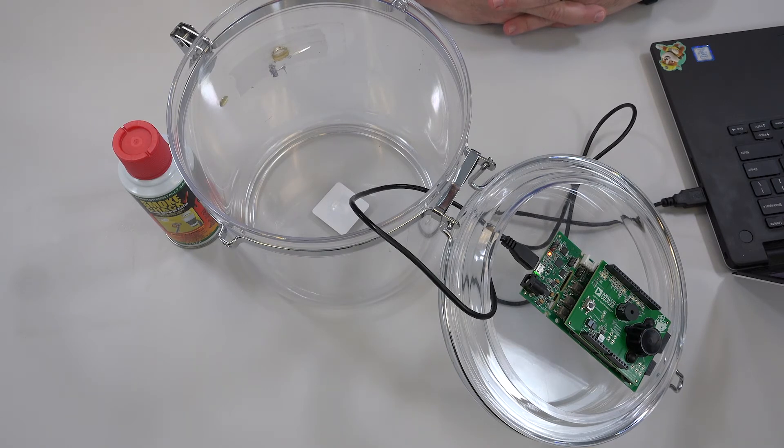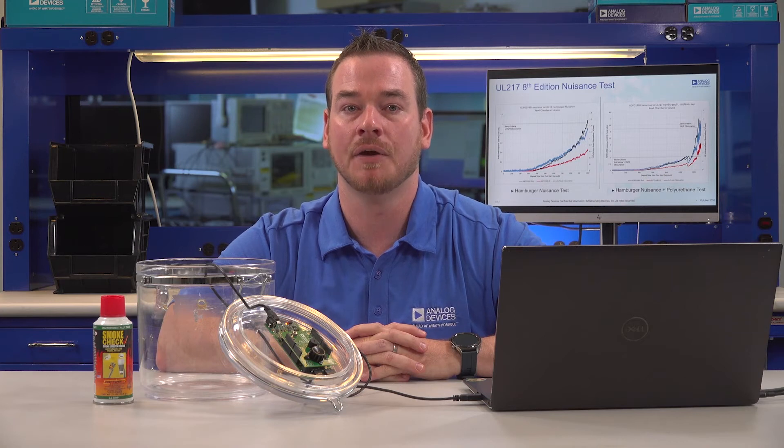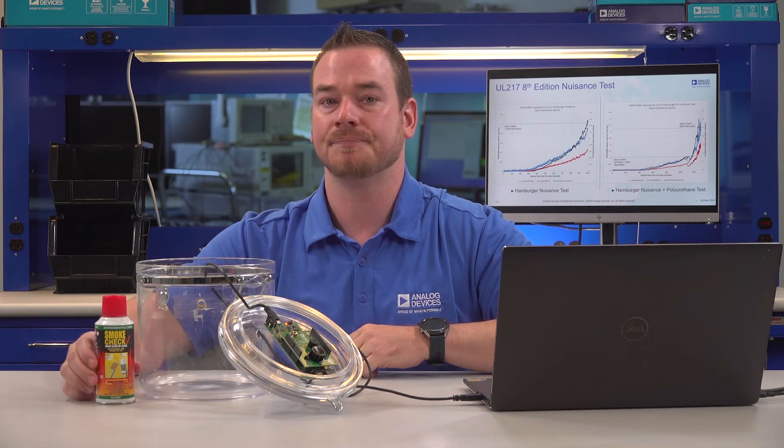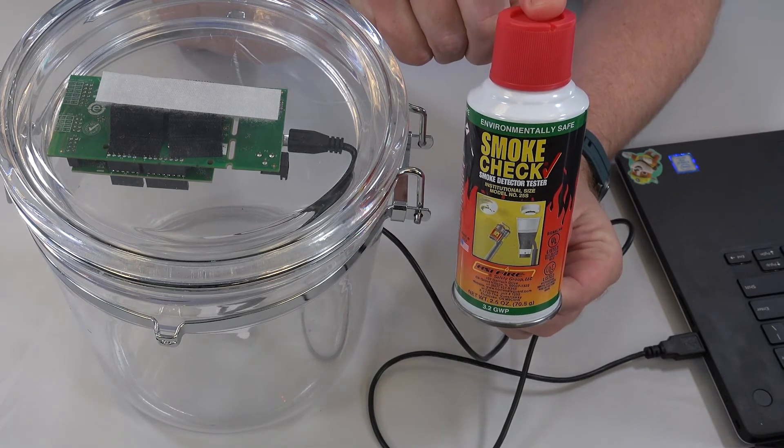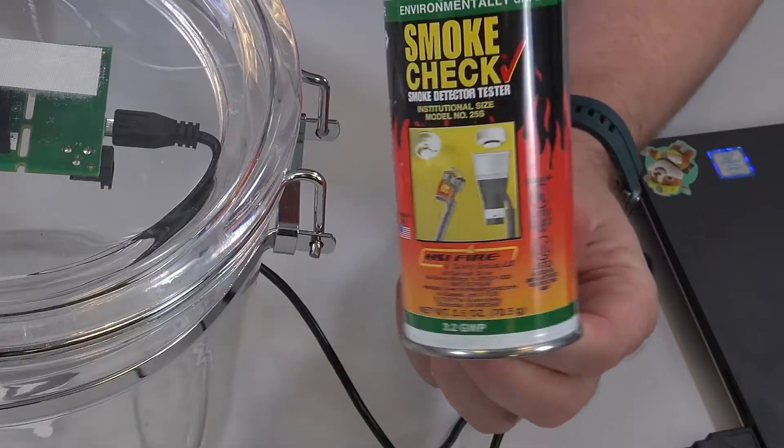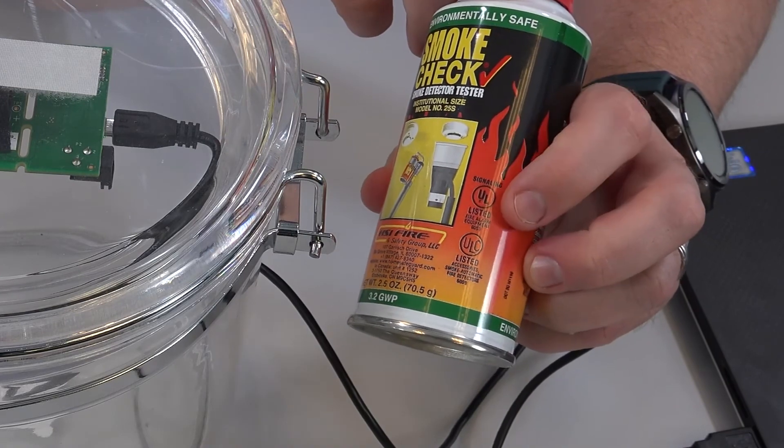Now for obvious reasons I'm not going to be lighting a real fire, so I'm going to be using this can of smoke. These are designed to test fire alarm systems inside houses and buildings to make sure they operate properly. You can even look here and see a little UL stamp at the bottom of this can.